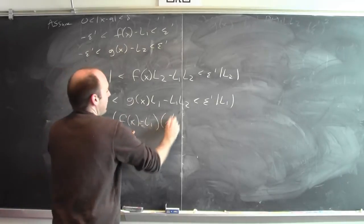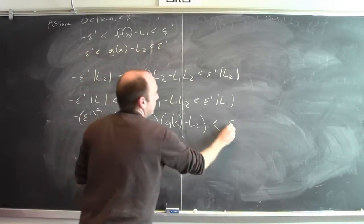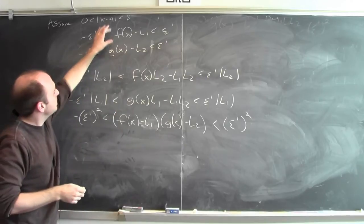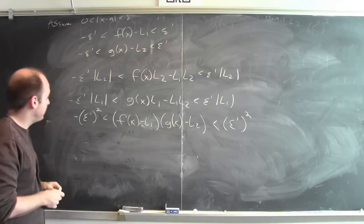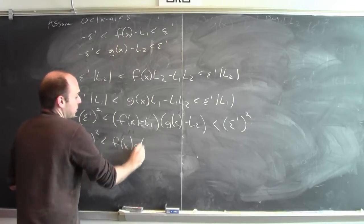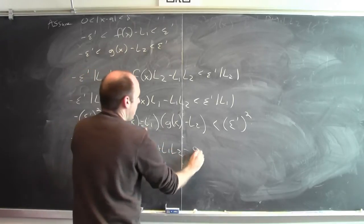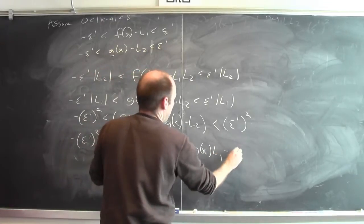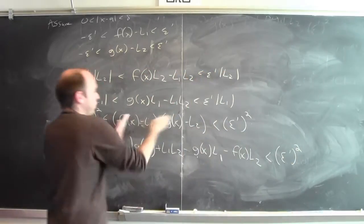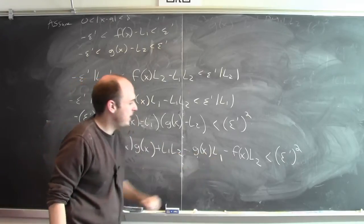Multiplying the two original inequalities together, I get that (f(x) − l1)·(g(x) − l2) is between −epsilon prime squared and epsilon prime squared. Distributing the middle product gives: f(x)·g(x) + l1·l2 − g(x)·l1 − f(x)·l2 is between −epsilon prime squared and epsilon prime squared. That's not exactly what I wanted — I want a statement about f(x)·g(x) being close to l1·l2.